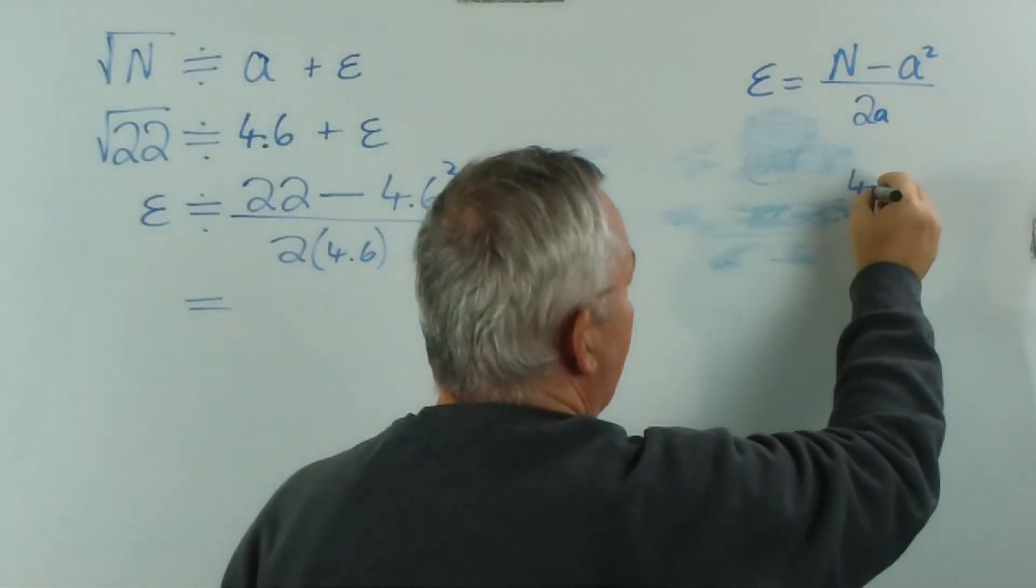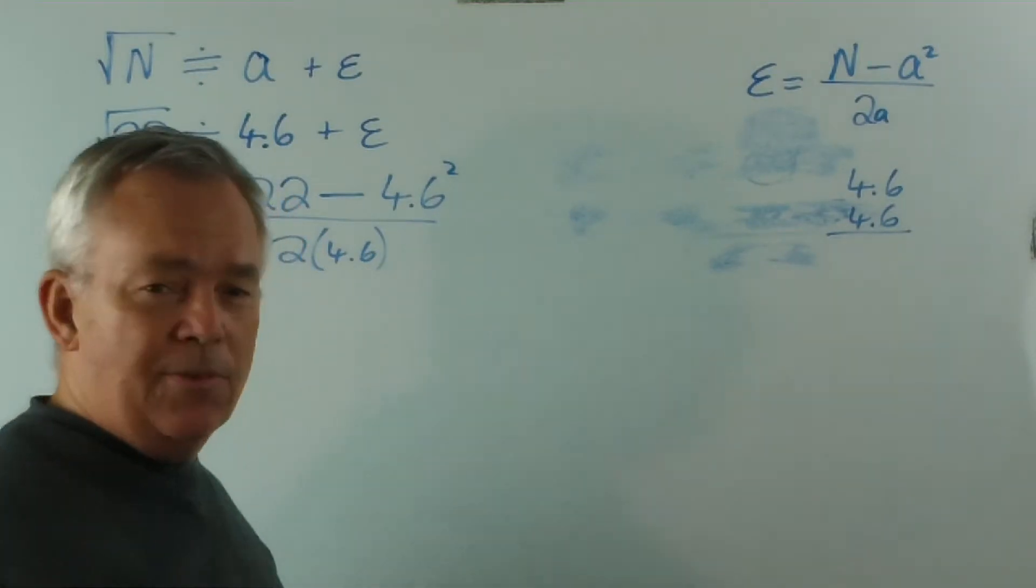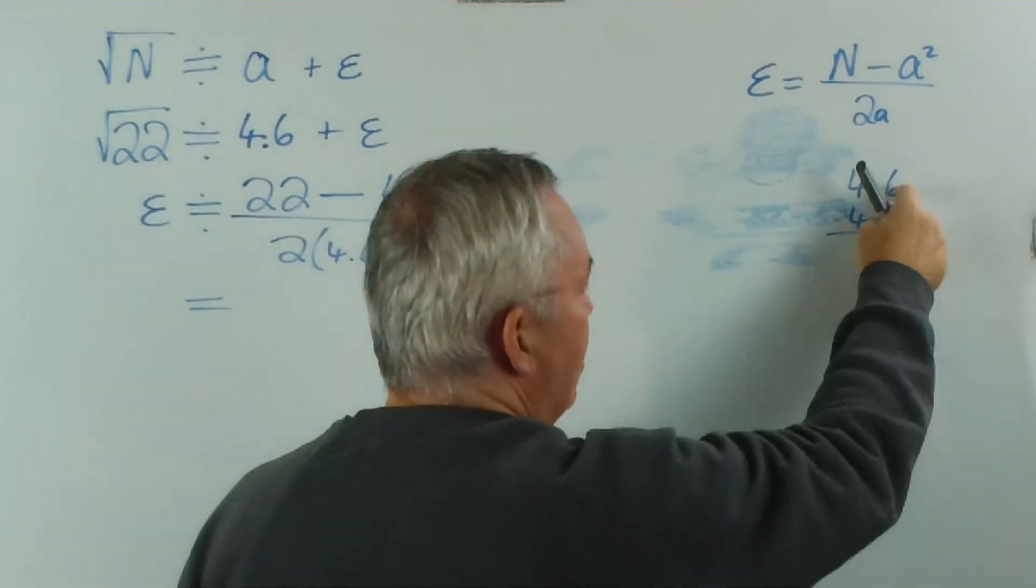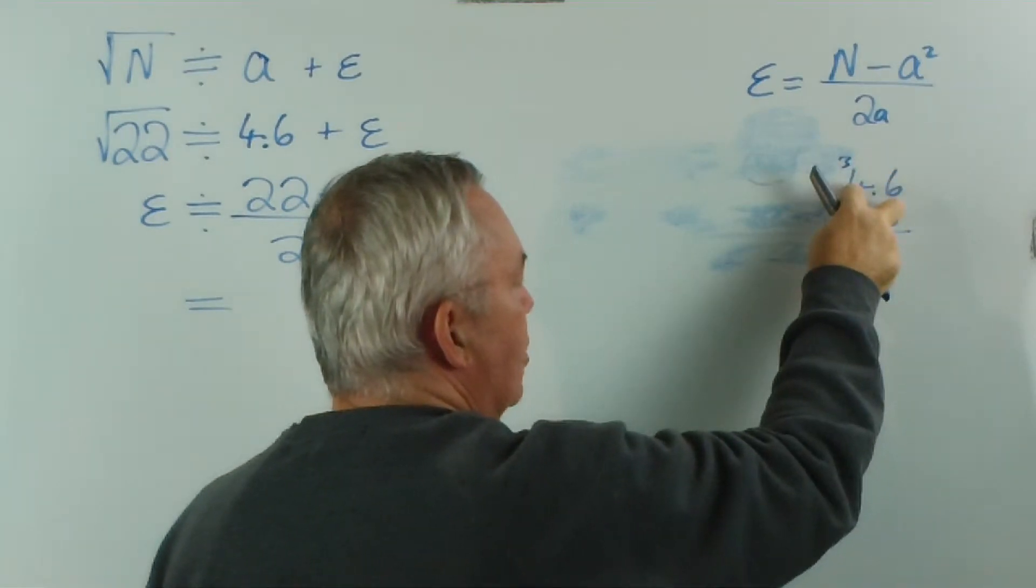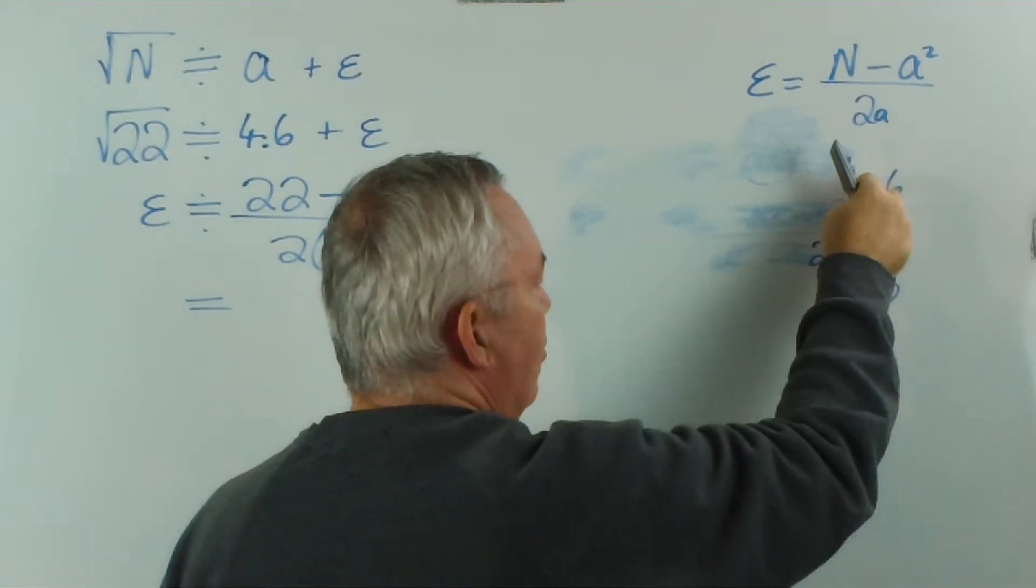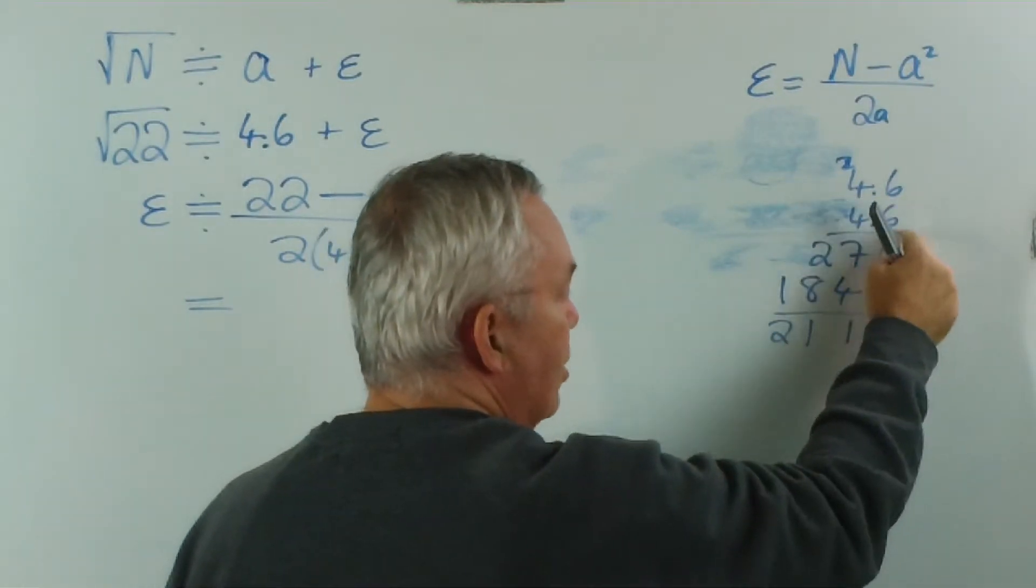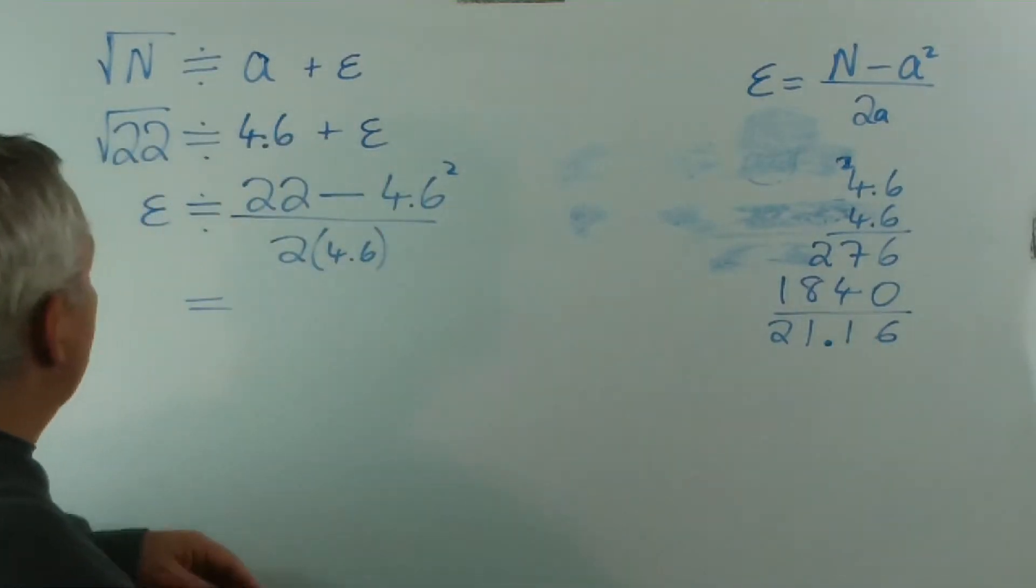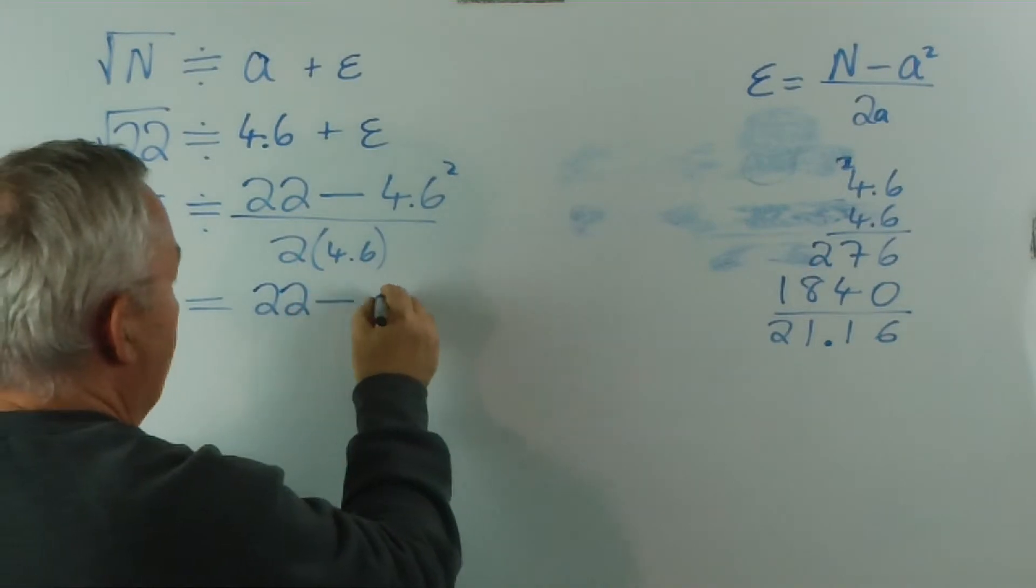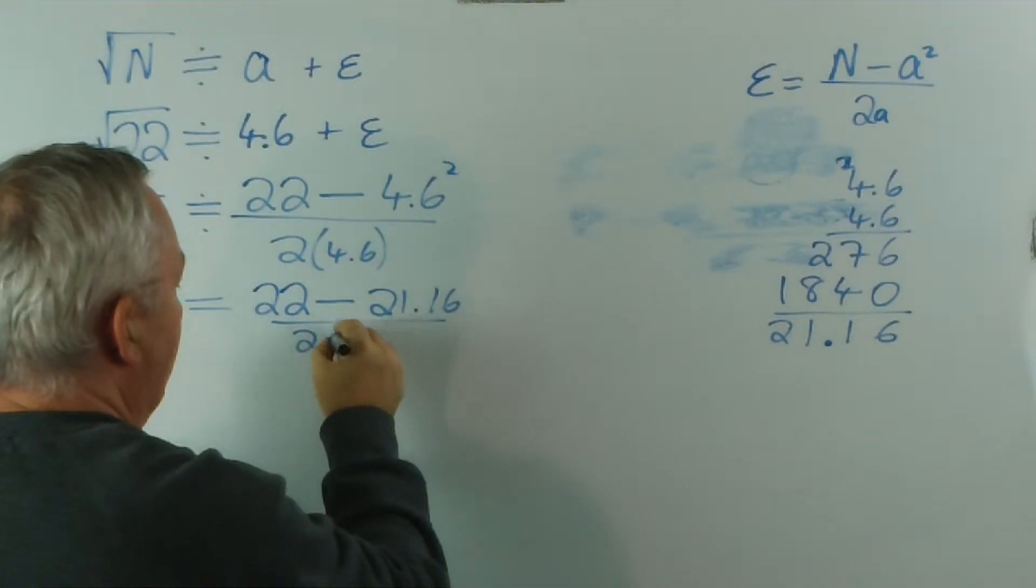Let's square 4.6. There are some algorithms around to calculate perfect squares fairly quickly. I'm just going to rely on good old-fashioned long multiplication. 6 times 6 is 36, carry the 3. 6 times 4 is 24 and 3 is 27. Start in the next column. 4 times 6 is 24. And 4 times 4 is 16 and 2 more is 18. 6, 1, 1, 2. And we've got 2 decimal places, so we need 2 in the answer. 21.16.